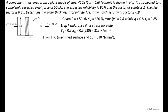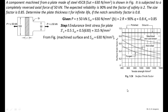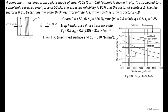From the figure we are going to calculate the surface finish factor Ka for the machined surface at the given ultimate tensile strength of 630 N/mm². Drawing a vertical line at 630 N/mm² and finding the intersection with the machined and cold-drawn surface curve, the surface finish factor Ka is approximately 0.76.